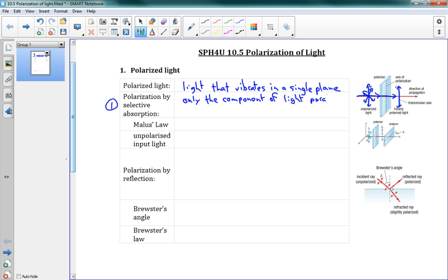only the component of light parallel to the axis of polarization gets through. So it cuts out any light that's not along the axis of polarization.